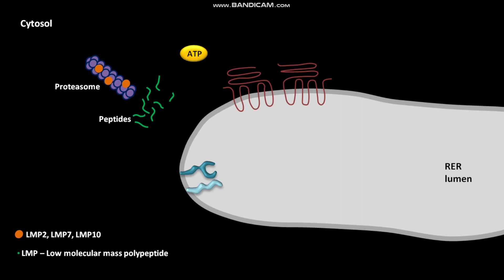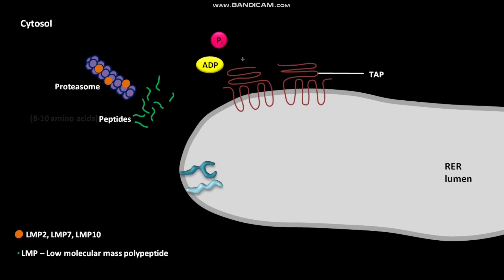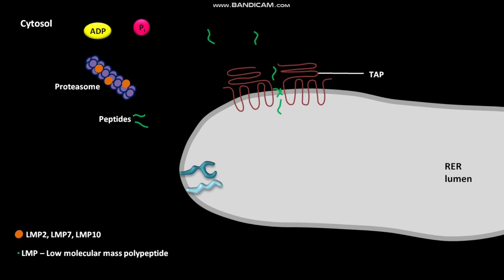These peptides contain 8 to 10 amino acids. The RER membrane has TAP. Cytosolic ATP first binds to the ATP-binding domain of TAP. The bound ATP then undergoes hydrolysis to produce ADP and Pi. Due to this ATP hydrolysis, TAP translocates cytosolic peptides into the RER lumen. The remaining cytosolic peptides are converted into amino acids.